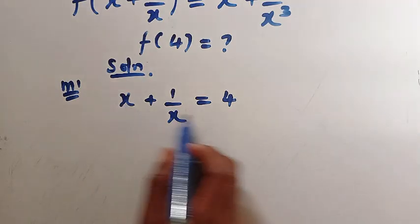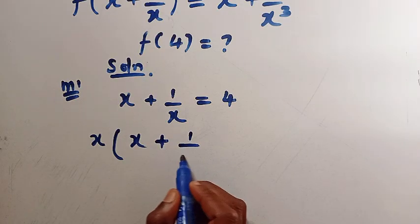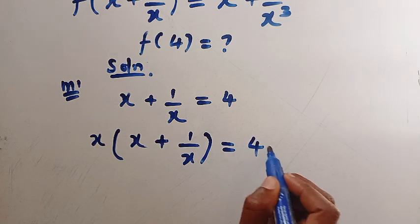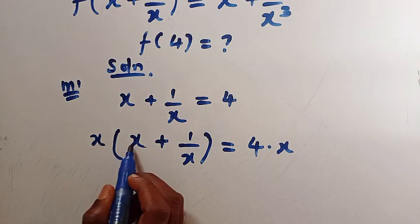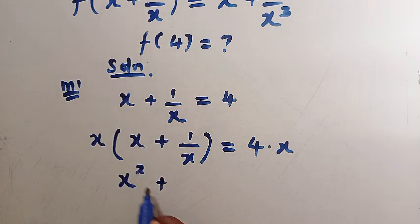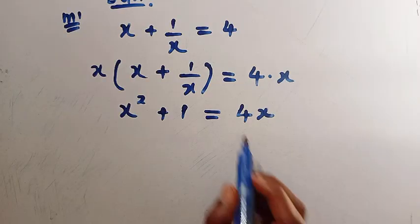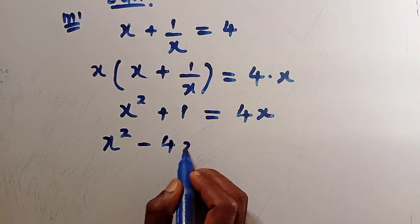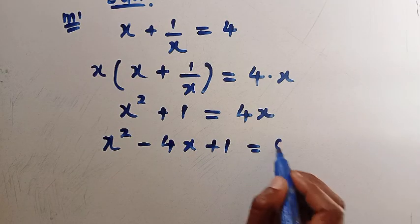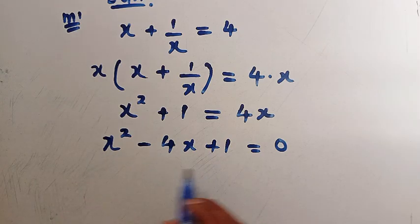Next, we are going to multiply both sides by x so that we can get the value of x. Multiplying by x, we have x times (x plus 1 divided by x) equals 4 times x. Opening the parentheses: x times x is x squared, plus x times 1 over x is 1, equals 4x. Transferring 4x to this side, we have x squared minus 4x plus 1 equals 0.